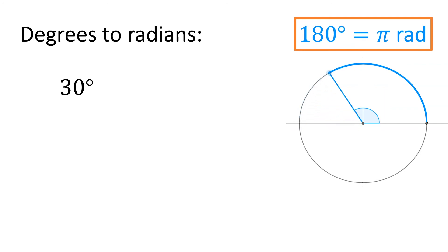Going the other way now. 30 degrees would be 180 divided by 6, that's π/6 radians.